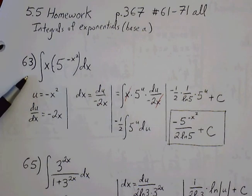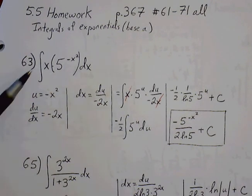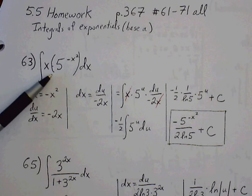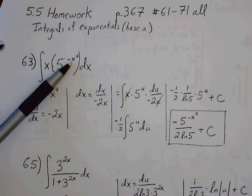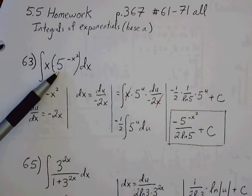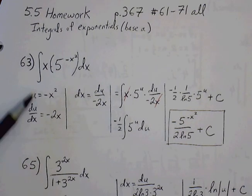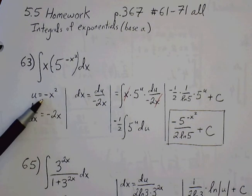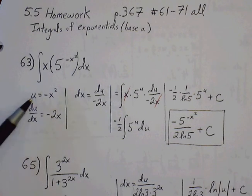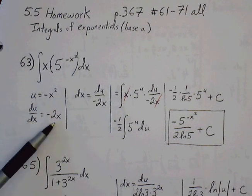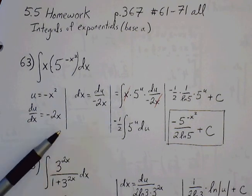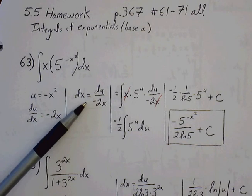Look at problem 63. If you see this, hopefully you can recognize that this is in the form of a to the u, a being base 5. So if we let the u value be negative x squared, we can find the derivative with respect to x. So du over dx equals negative 2x. Solve for dx, and we get du over negative 2x.